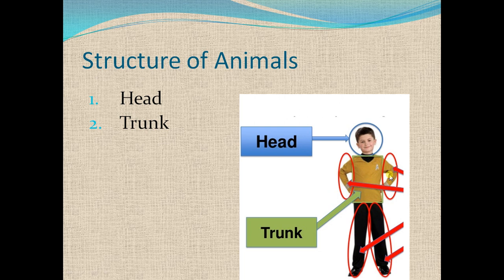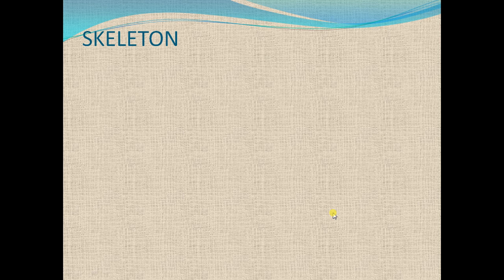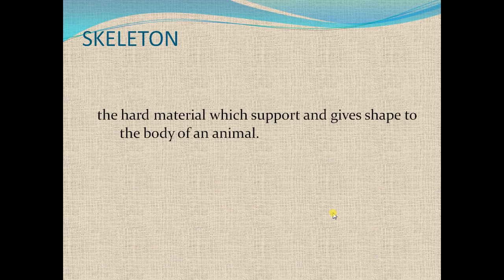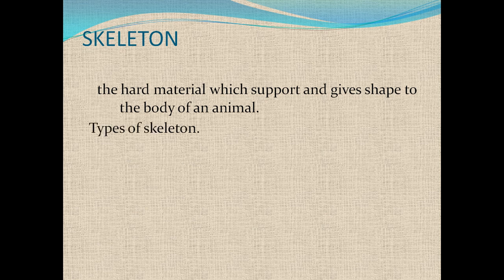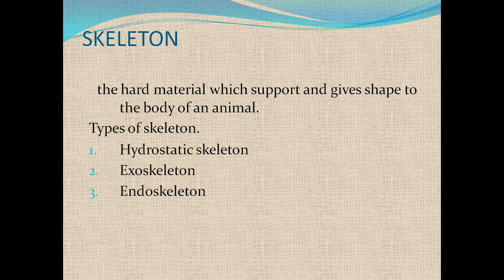Limbs mean forelimbs, which are hands, and hind limbs, which are legs. Skeleton: the hard material which supports and gives shape to the body of an animal is called a skeleton. There are three main kinds of skeleton: hydrostatic skeleton, exoskeleton, and endoskeleton.